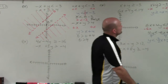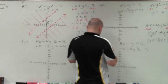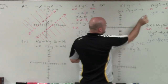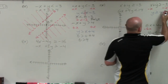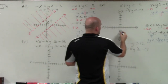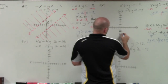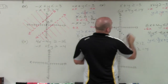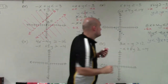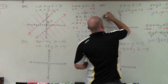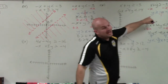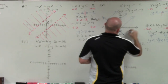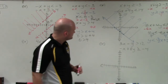Let's graph y is greater than or equal to negative x minus 3. Go to the y-intercept at negative 3, and my slope is negative 1 over 1, so I go down 1 to the right 1, or up 1 to the left. I have a greater than or equal to symbol, so that's a solid line. Since y is greater than, shade all values above.